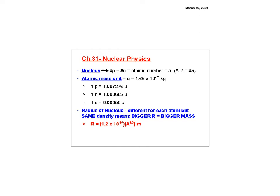Here are notes for our last chapter in AP 2: Chapter 31, Nuclear Physics. The nucleus has protons and neutrons. The atomic number is Z, the atomic mass is A, and A minus Z gives you the number of neutrons.